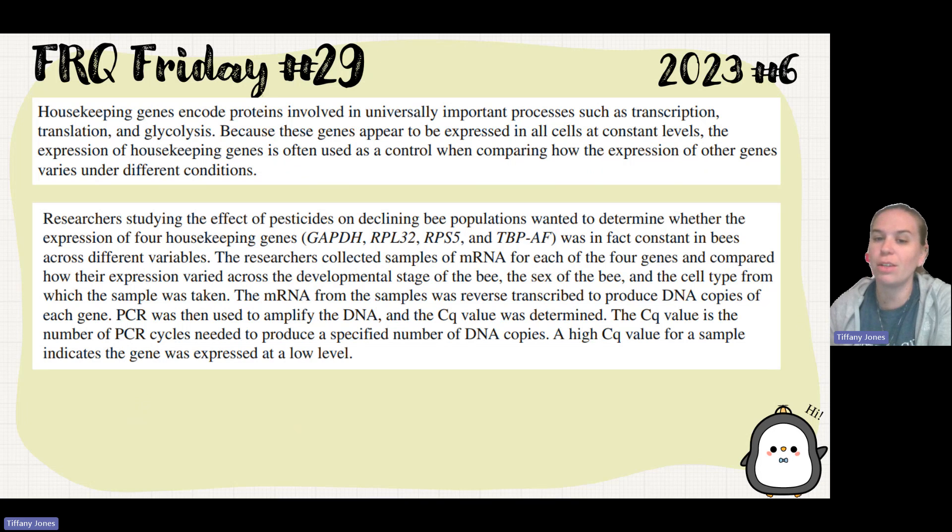Researchers studying the effects of pesticides on declining bee populations wanted to determine whether the expression of four housekeeping genes was in fact constant in bees across different variables. The researchers collected samples of mRNA from each of the four genes and compared how their expression varied across the developmental stage of the bee, the sex of the bee, and the cell type from which the sample was taken.